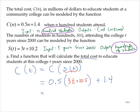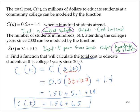Simplifying by following the order of operations gives 1.5t plus 5.1 plus 1.4, and so that's 1.5t plus 6.5 is C of t. This is the function that will determine the cost to educate students at this college t years since 2000.